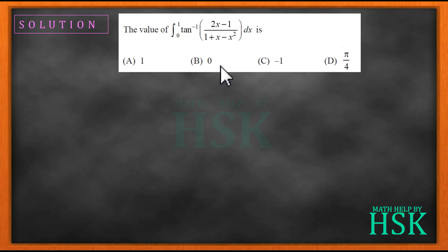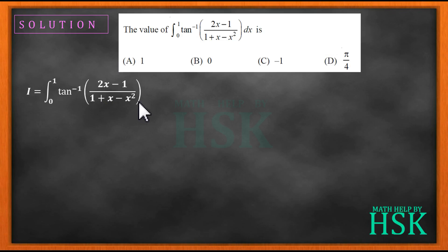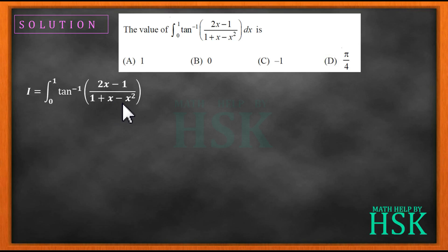Now to solve this question and determine which option is correct, first of all I am going to take the given definite integral. The idea I am going to apply — the logic required here — is simplification of this value: tan⁻¹ of (2x-1)/(1+x-x²). After that, you will see that the question becomes very easy to solve.